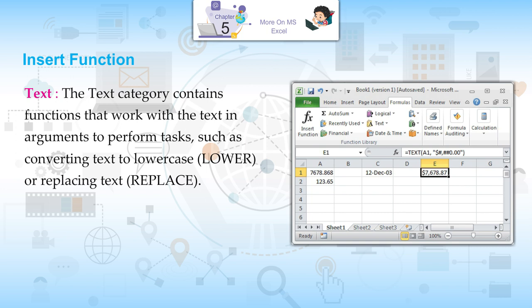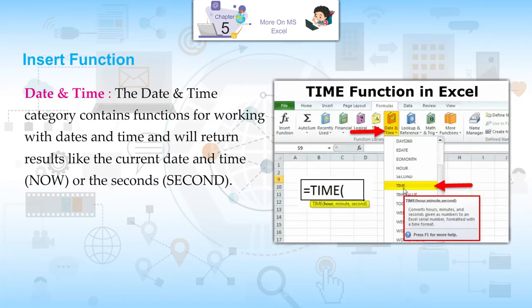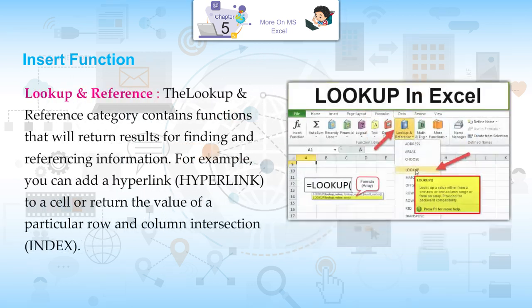Text: The text category contains functions that work with text in arguments to perform tasks such as converting text to lowercase using LOWER, or replacing text using REPLACE. Date and Time: The date and time category contains functions for working with dates and times and will return results like the current date and time using NOW, or the seconds using SECOND.